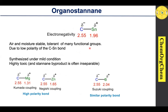The polarity difference can be easily visualized by the electronegativity values. Somewhat similar polarity nature of the carbon-tin bond is seen in the carbon-boron bond in organoboronic acids, where organoboronic acid is useful for the Suzuki cross-coupling reaction. We have already discussed Kumada coupling, Negishi cross-coupling, and Suzuki cross-coupling reaction in our channel.